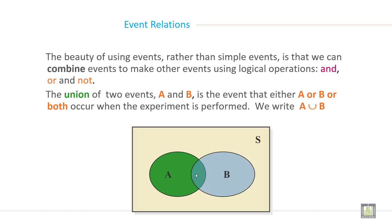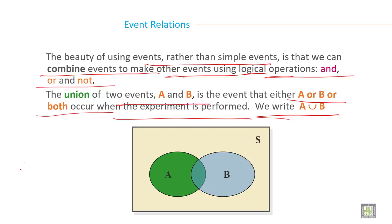Event relationship. The beauty of using event rather than simple event is that we can combine event to make other event using logical operation and, or, not. The union of two event A and B is the event that either A or B or both occur when the experiment is performed. And we write A union B. And the symbol of union is OR. Whenever OR is written, you must understand that it is union.